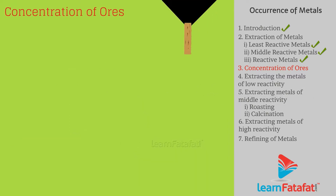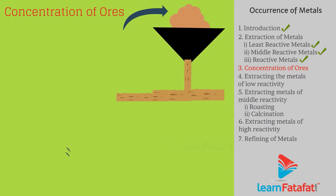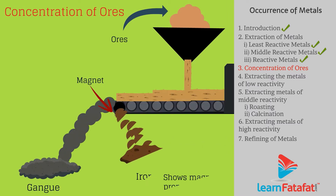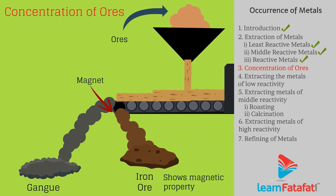For example, iron shows magnetic properties but gangue does not. So iron can be easily separated with the help of magnetic separation technique.